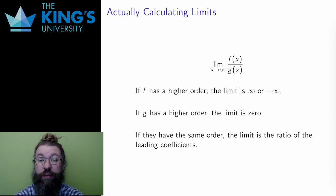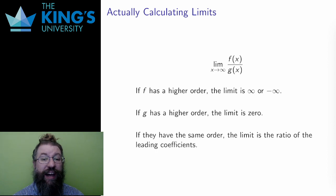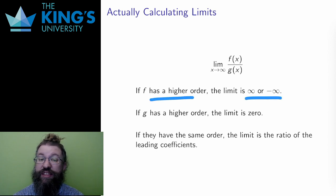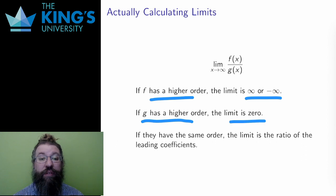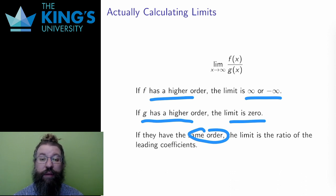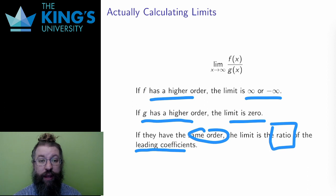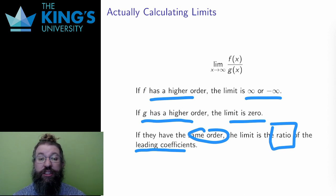I have this idea of asymptotic analysis and asymptotic order. How do I actually calculate infinite limits of ratios of functions? I just need to determine the asymptotic order of the numerator and denominator. If the numerator has a higher order, the limit is infinity or negative infinity, depending on the sign of f and g. If g has a higher asymptotic order, the limit is zero. If f and g have the same asymptotic order, I look at the leading coefficients — the constants multiplied by the highest asymptotic order terms in both f and g — and the limit will be the ratio of these leading coefficients. This is a very efficient algorithm; often very little calculation is required.